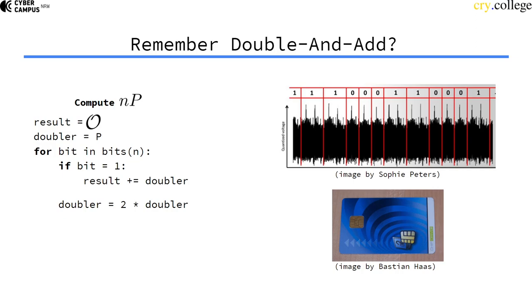It turns out when you have an algorithm whose runtime and operation order depends on the secrets, in some cases you can do side channel attacks on it.